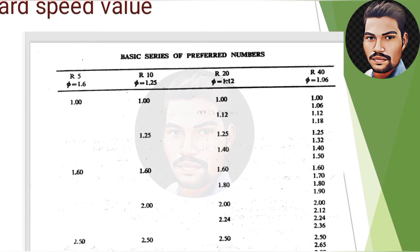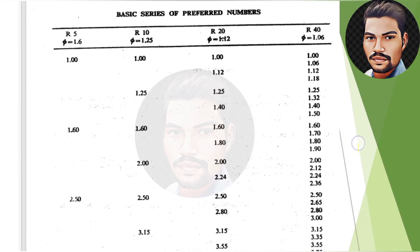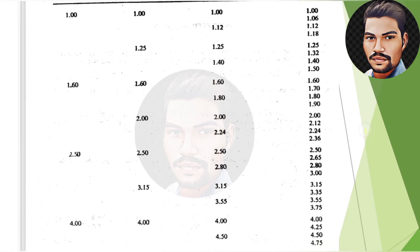Continuing to leave six intervals, we get 1180 rpm as the seventh speed, then 1700 rpm as the eighth speed.